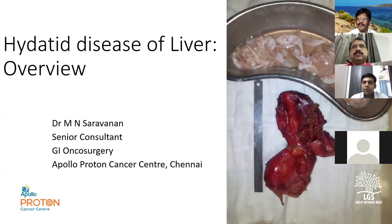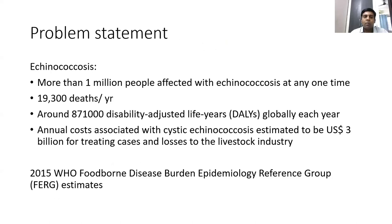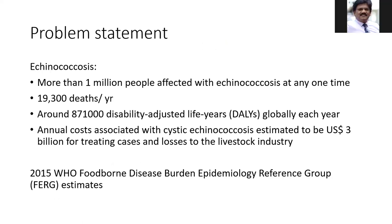Hydatid disease — we often remember this picture of the membranes floating, which reminds me of a coconut. To begin with the problem statement: Echinococcus affects nearly about a million people at any given time and is responsible for almost 20,000 deaths every year. This accounts for about 871,000 disability-adjusted life years globally, and costs billions of dollars not only in human losses but also for the livestock industry.